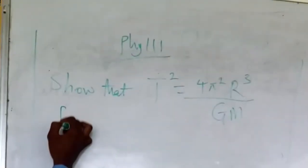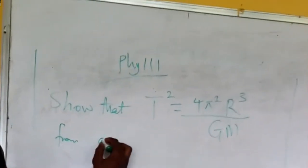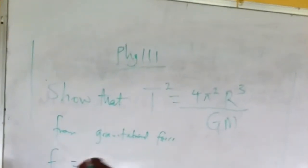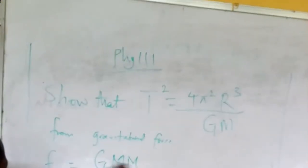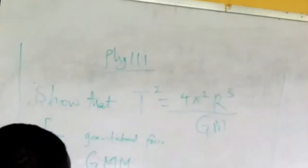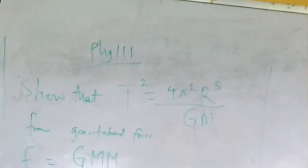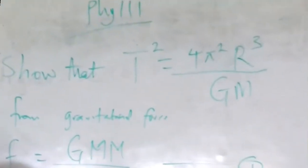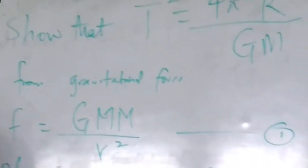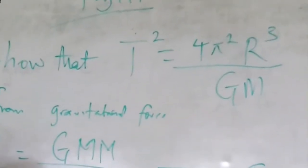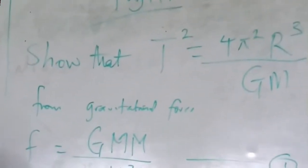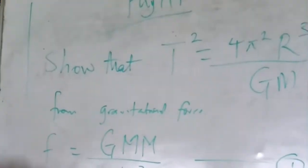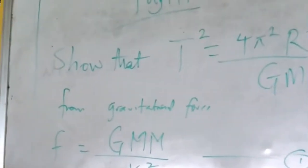Starting from gravitational force, we have F equals G times M₁ times M₂ over r², and that is equation 1. Also from centripetal force, we have F equals mv² over r — that is equation 2. We want to equate equation 1 and equation 2 together.